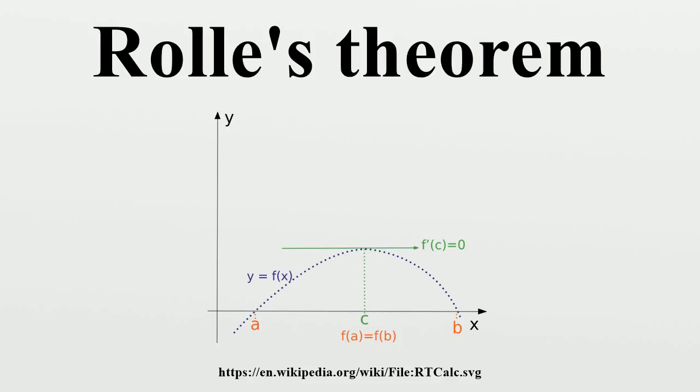If for every x in the open interval the right-hand limit and the left-hand limit exist in the extended real line [-∞, ∞], then there is some number c in the open interval such that one of the two limits is greater than or equal to zero and the other one is less than or equal to zero. If the right and left-hand limits agree for every x, then they agree in particular for c. Hence the derivative f'(c) exists at c and is equal to zero.